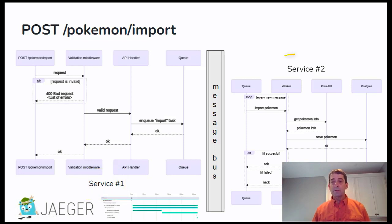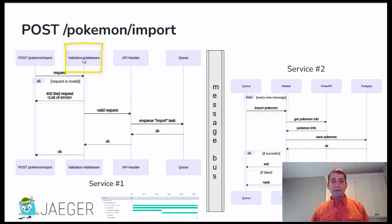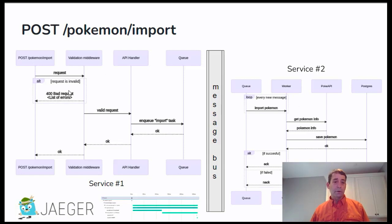We have service one and service number two. We're going to be testing the import of a Pokemon — and this is a very important thing, we do not want to lose a Pokemon. We also want it to be very quick. So we accept the POST command, we validate it, we throw it on a message bus, and we immediately return a 200 if that was successful. All the hard work is done by service number two. It dequeues the message and writes it to the database, and that happens asynchronously. The POST call happens extremely quickly, and the second half happens some time after that. The one on the left takes a few milliseconds; the one on the right takes hundreds of milliseconds.